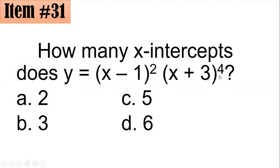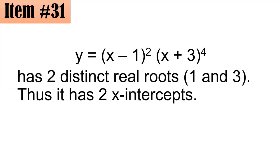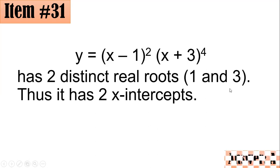We know it has six roots. However, when we speak about the number of x-intercepts, we just need to get the number of distinct real roots. There are only two distinct real roots. When you equate this expression to zero, you get only distinct values, so it has two x-intercepts only — that is letter A.